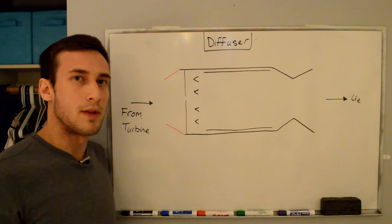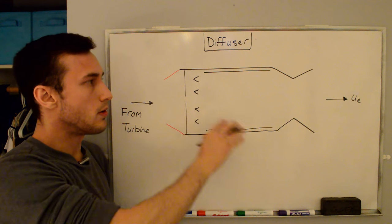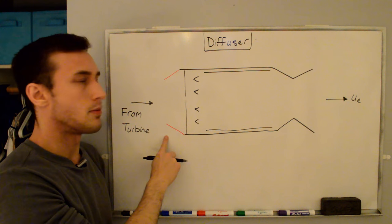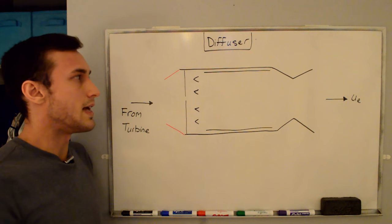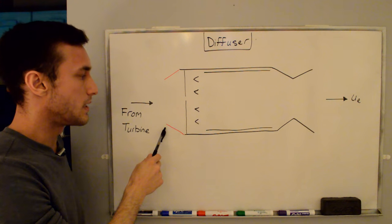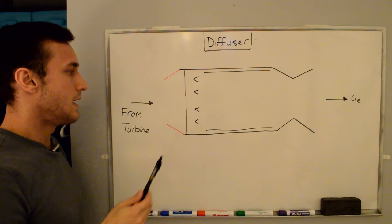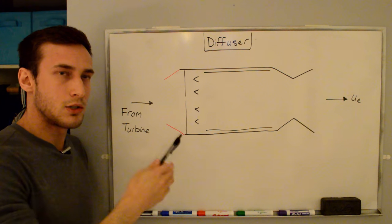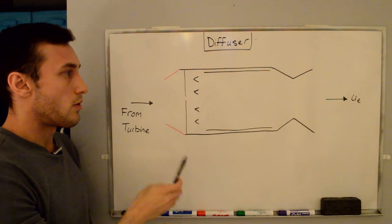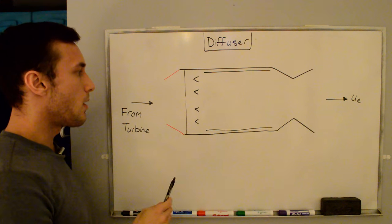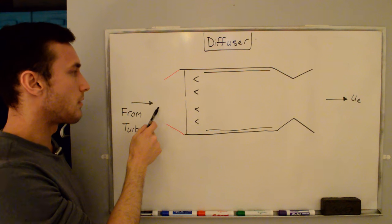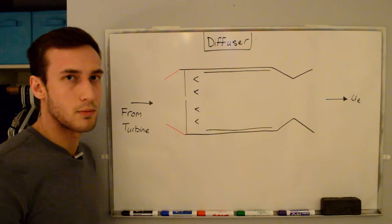Now that we've gone through an overview of the afterburner, let's go into more detail in the components, and we're going to start with the entry to the afterburner called the diffuser. The afterburner jet pipe is connected to the exit of the turbine by something called a diffuser, and while you may not even see the diffuser when you're looking at a turbojet engine or turbofan engine, or even think about it when you're thinking about afterburners, it's a super important component because it needs to slow down the flow coming from the turbine before it enters the afterburner.